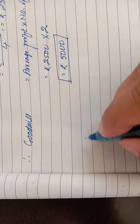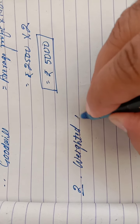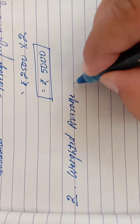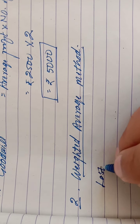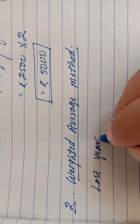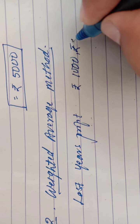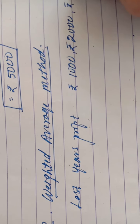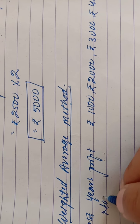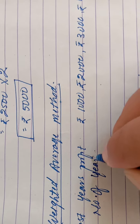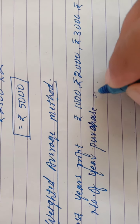The second method is the Weighted Average Profit Method. Same process — last 4 or 5 years' profits are given. First year profit is 1000, second year profit is 2000, third year profit is 3000, and fourth year profit is 4000. Number of years purchase is also given — 2 years.